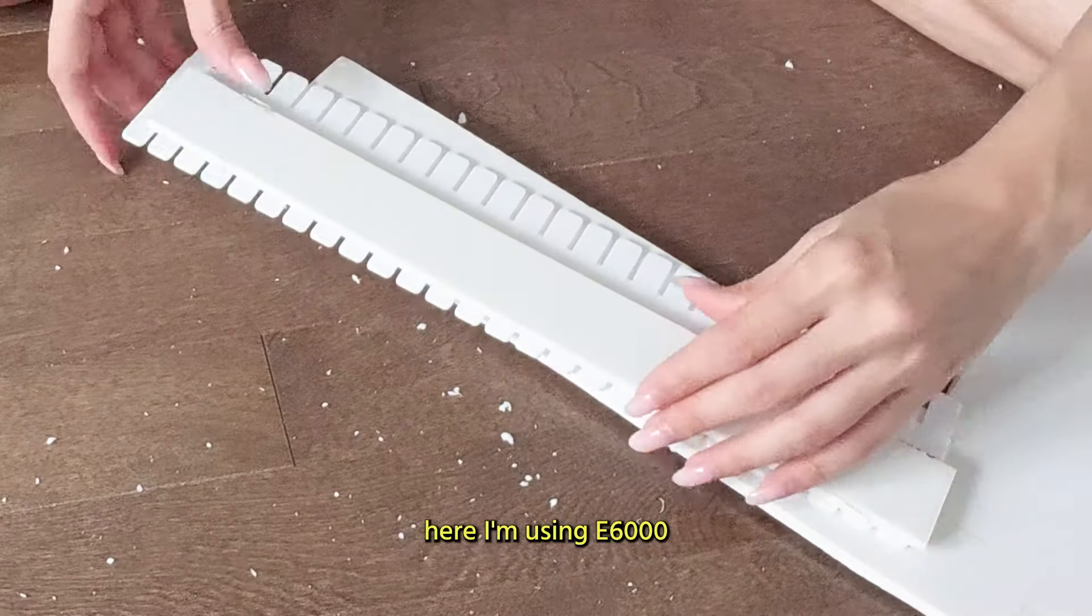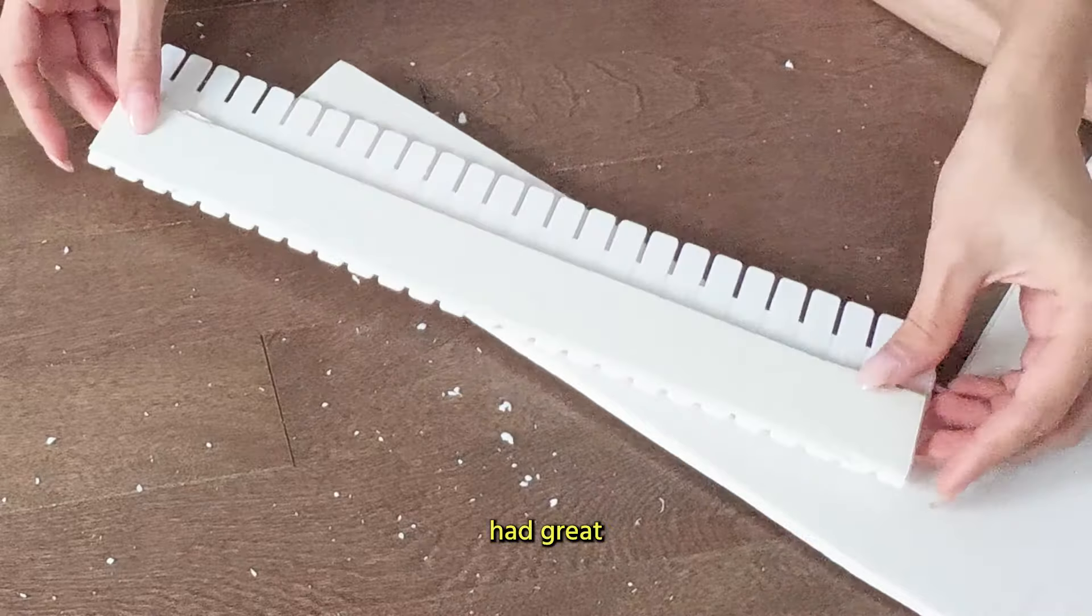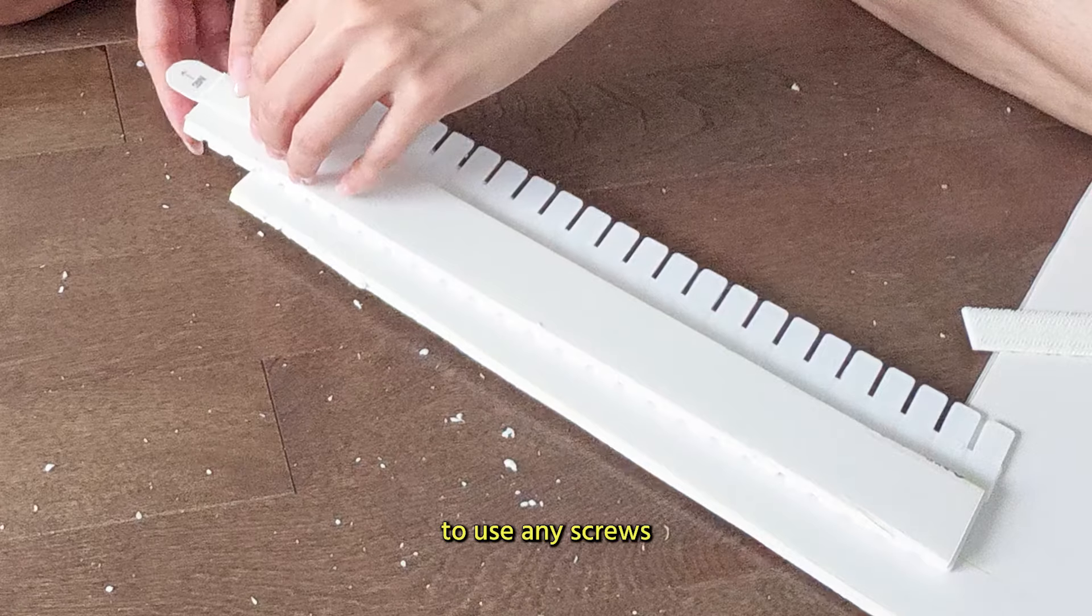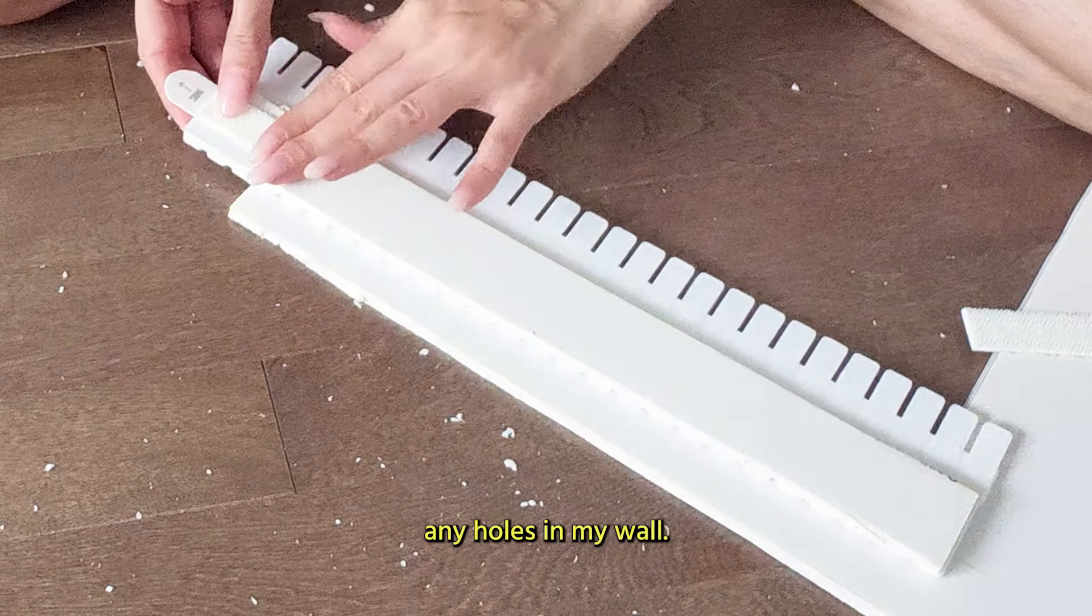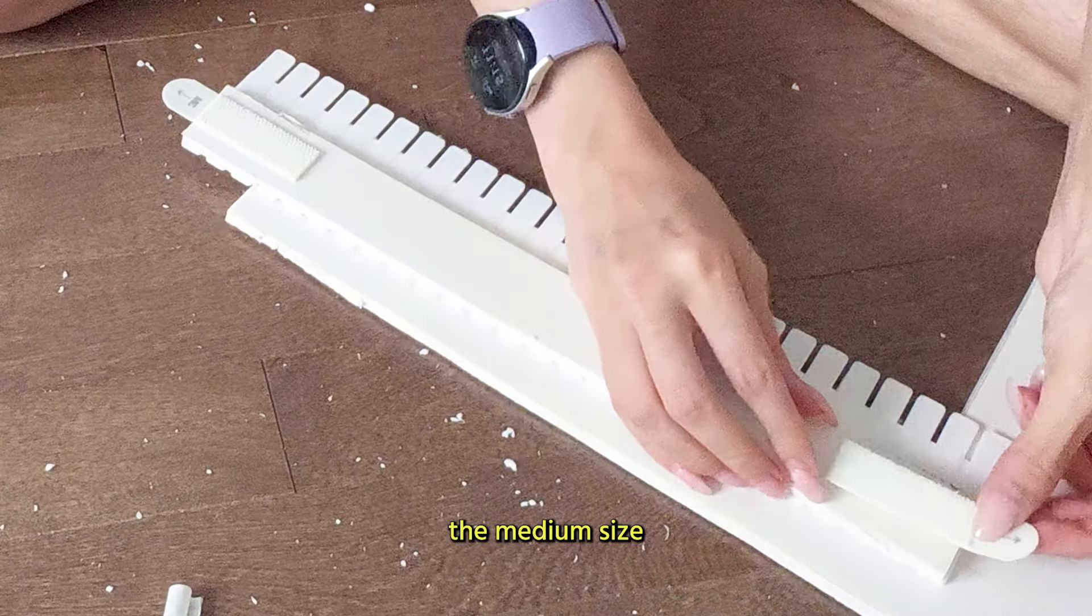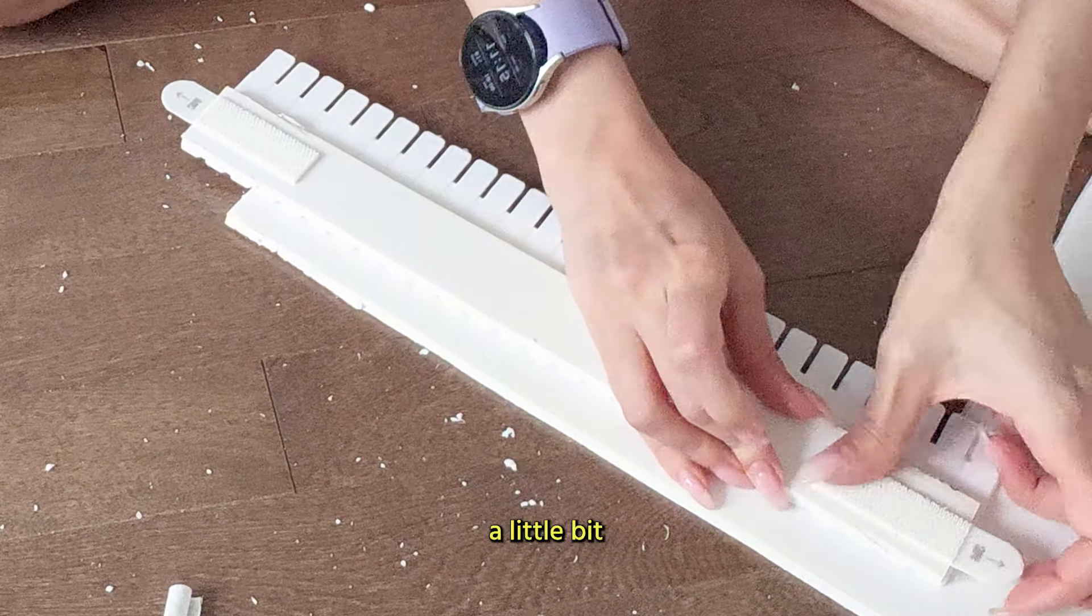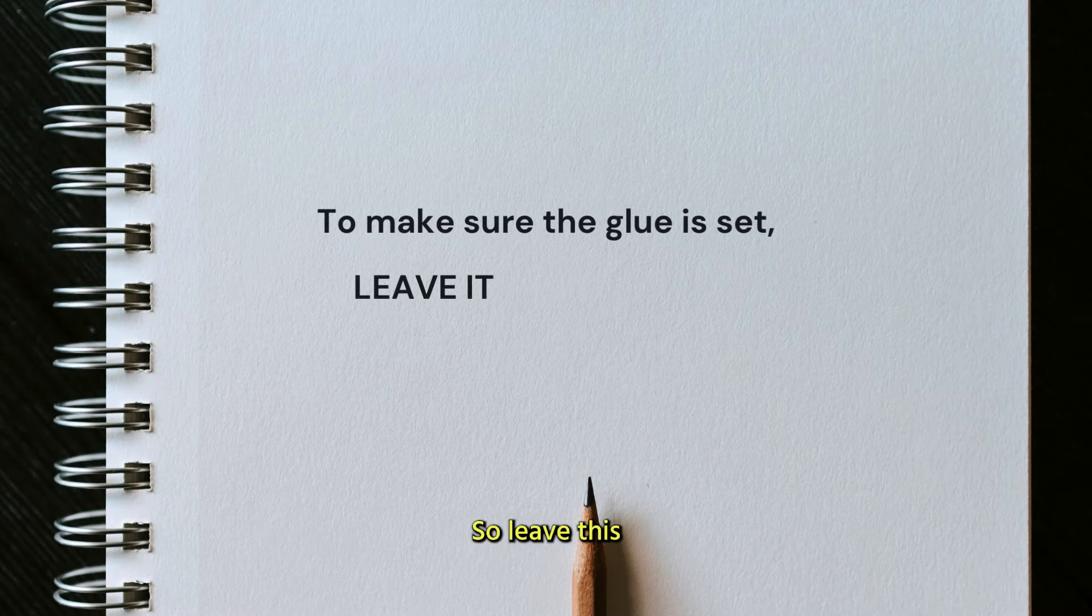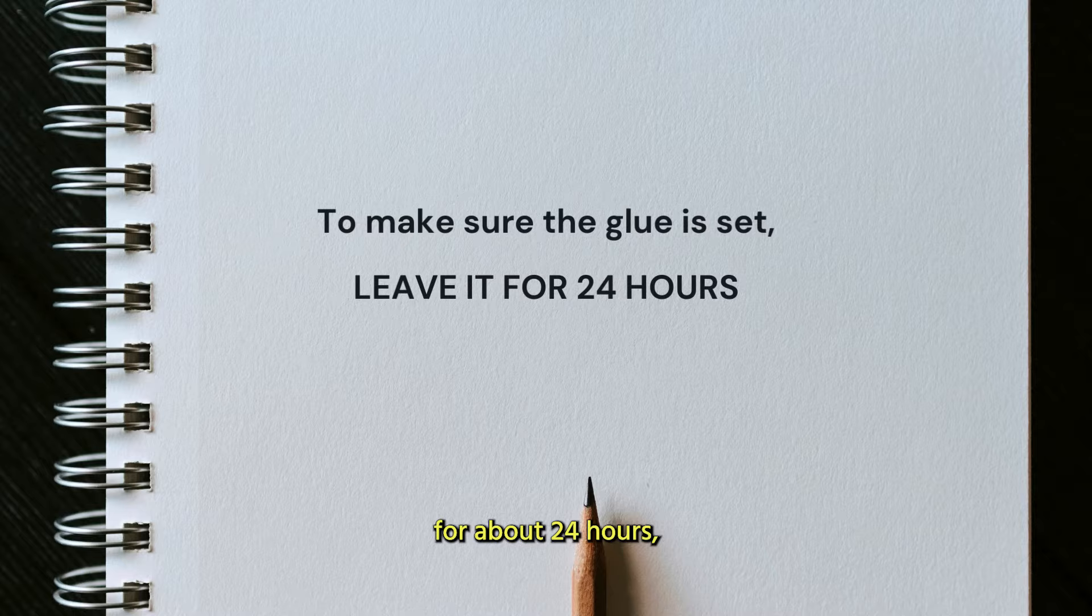Here I'm using E6000 because I've had great success with it and it still is holding my earrings intact. I didn't want to use any screws or poke any holes in my wall so I'm using command strips here. This one's the medium size because I believe they hold a little bit more weight and my earrings are heavy. To make sure that the glue is set, leave this for about 24 hours.